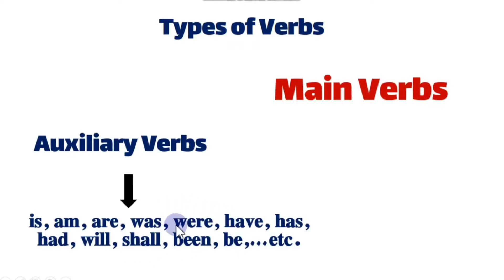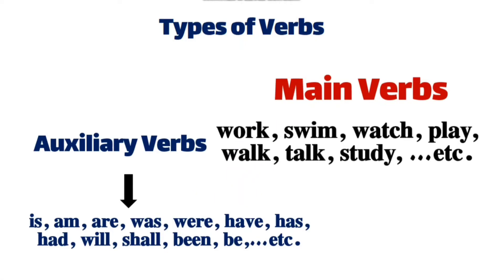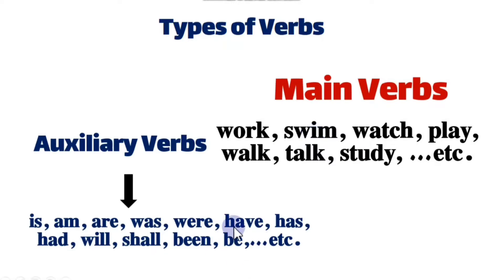They are helping verbs — they help the main verbs in the formation of tenses. Main verbs can express physical actions. For example: work, swim, watch, play, walk, talk, study, etc. All of these are main actions — we do them with our physical body parts. For example, if we work, we use our hands and legs. Swim — again we use our physical body parts. We combine these main verbs along with the auxiliary verbs to form different tenses.